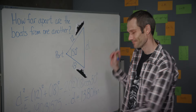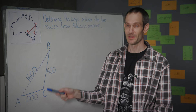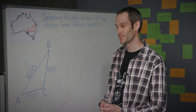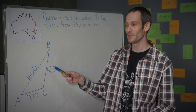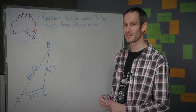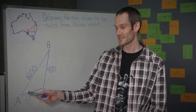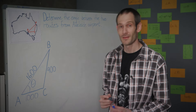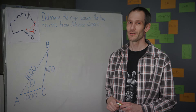Let's look at one more situation. In this situation, I have three airports: Adelaide, Brisbane, and Canberra. The distance between Adelaide Airport and Brisbane Airport is 1,600 kilometers, the distance between Adelaide Airport and Canberra is 1,000 kilometers, and the distance between Canberra and Brisbane is 900 kilometers. What we'd like to determine is the angle between the two routes from Adelaide Airport. Here I have a triangle with all sides but no angles, so once more I can use the cosine rule.